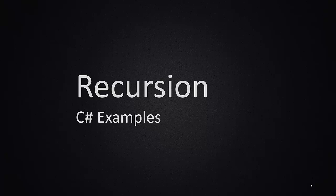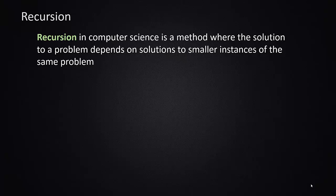Here we're going to talk about recursion and provide a few C# examples. Recursion is when you have a solution that uses the same call to solve a smaller instance of the same problem. In other words, if one step relies on completing the same function over again for a smaller subset of the problem, this can be a recursive method.